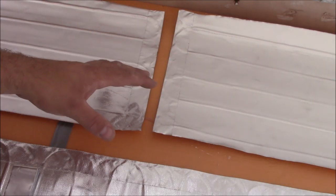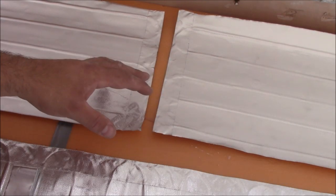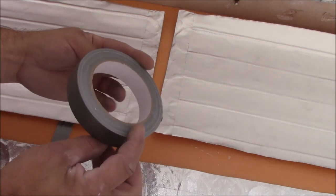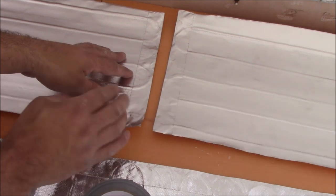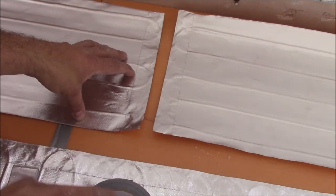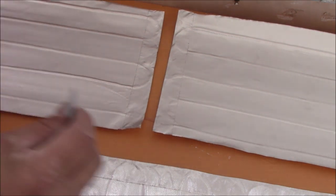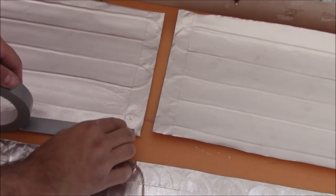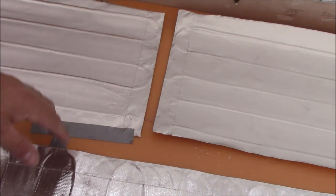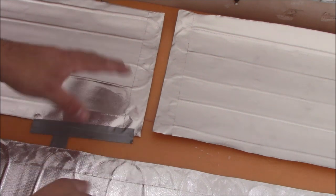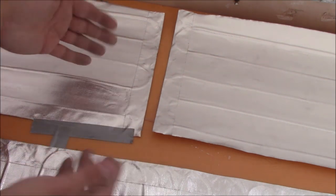So when you buy a ProWarm kit, basically the mat and the thermostat, they also supply you with insulation tape. This is for taping the mat onto the foam, so then it's not moving under the laminate flooring. So it's not going to get damaged.